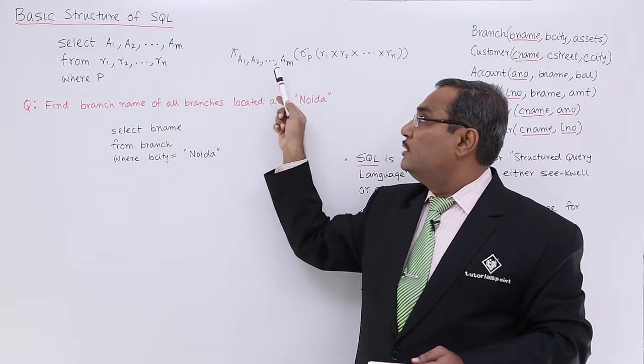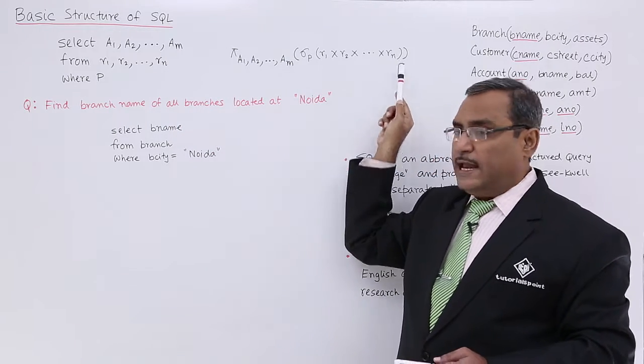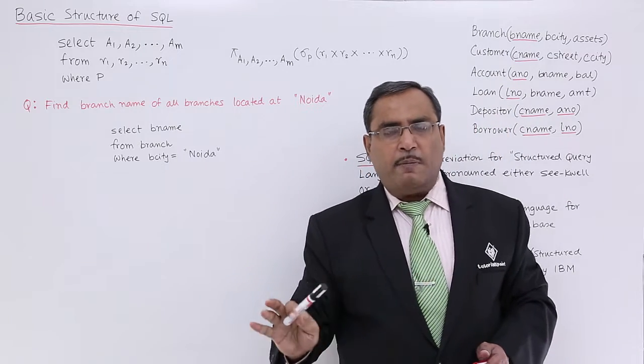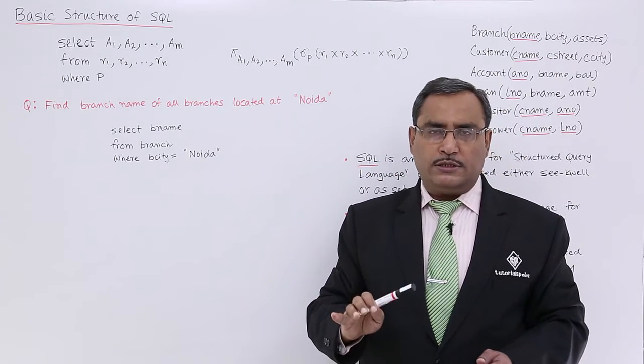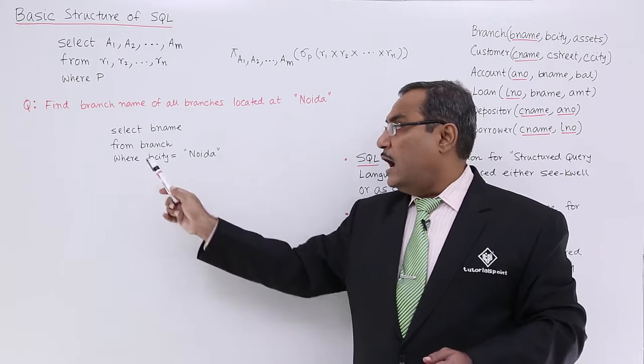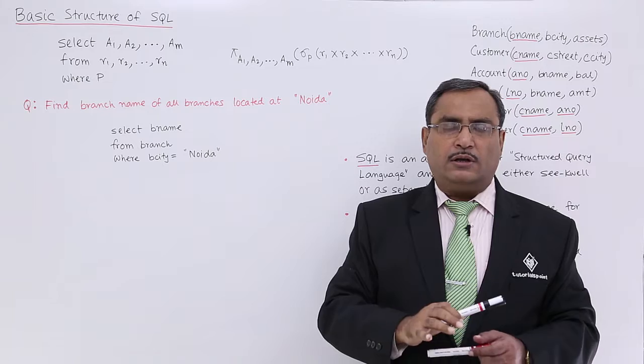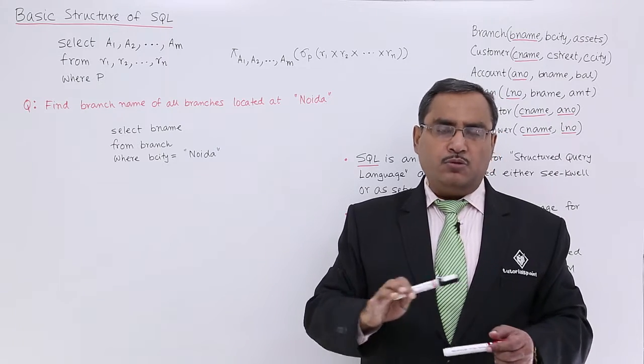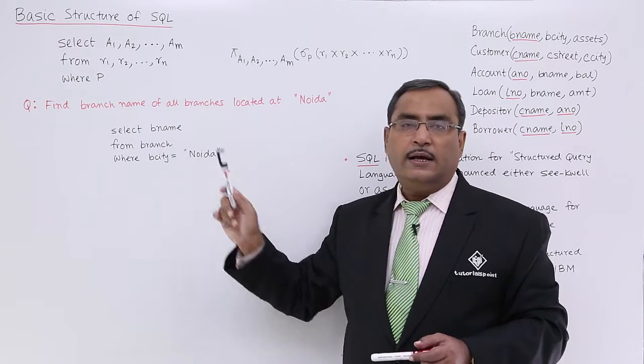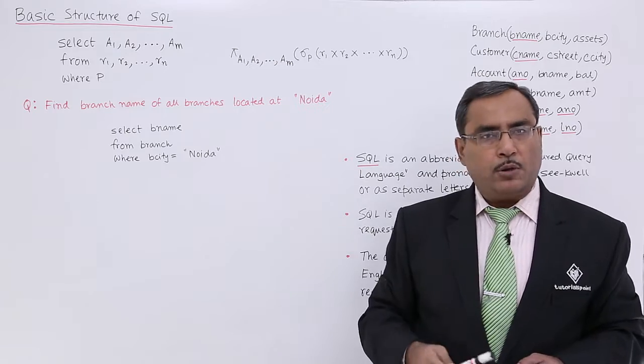Remember here we have used the suffix m, here we have used the suffix n. Suffix m is there, suffix n is there—that means it is not mandatory that the number of relation names whatever you are writing after FROM separated by commas should be the same. It is not necessary that the count of those relations must be same as the attribute numbers or the number of attributes.